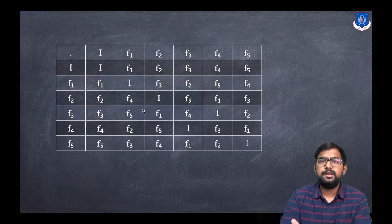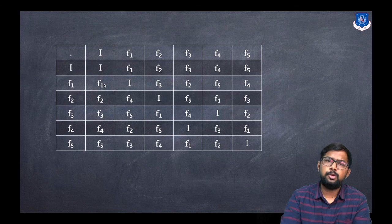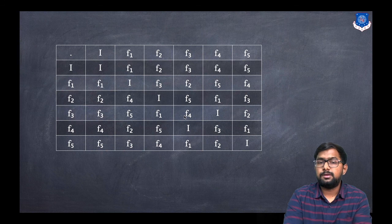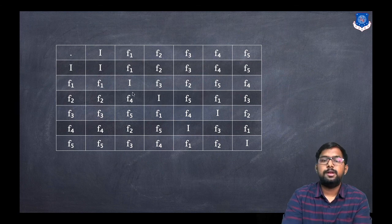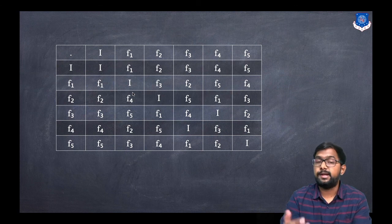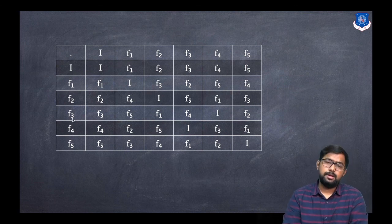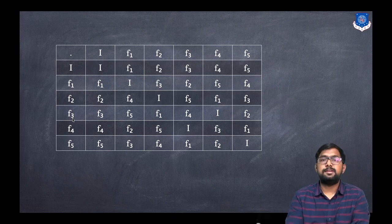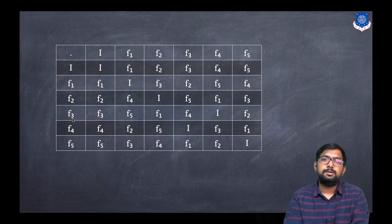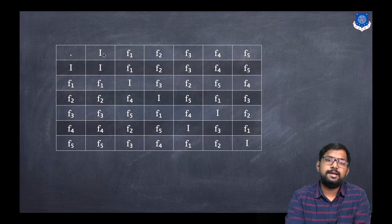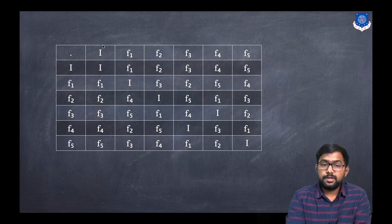We now check the group axioms. Closure: all composition results are elements from {i, f1, f2, f3, f4, f5}, so closure holds. Associativity: you can verify this independently — it holds for function composition. Identity: from the table, composing any element with i returns that element itself. For example, fn ∘ i = fn and f2 ∘ i = f2, so i is the identity element and it is unique.